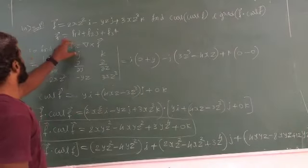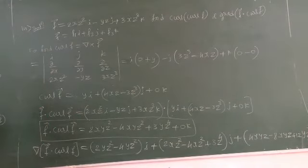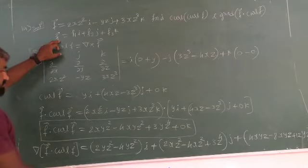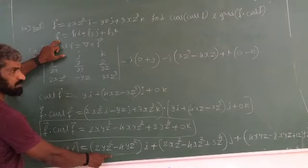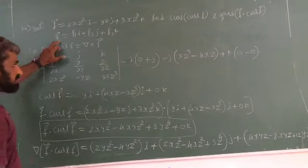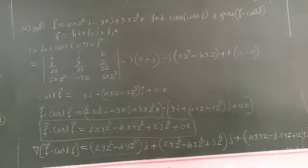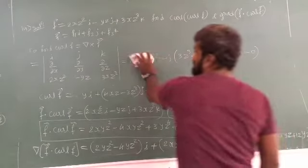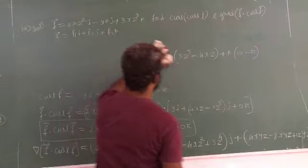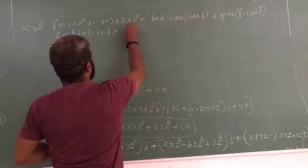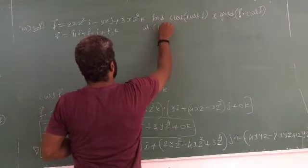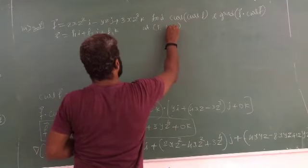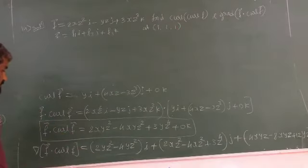We evaluate at the point (1, 1, 1). Putting x equals 1, y equals 1, and z equals 1, then we get the value at (1, 1, 1).